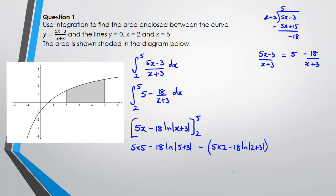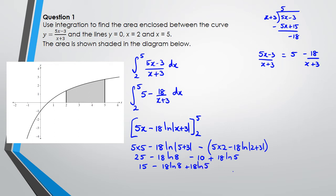You can put this in the calculator and get the answer 6.54. Working it out manually: 5 times 5 is 25, so 25 minus 18 ln 8, then negative 10, and the two negatives multiply to give positive 18 ln 5. This becomes 15 minus 18 ln 8 plus 18 ln 5, which simplifies with negative 18 as a common factor giving 15 minus 18 times (ln 8 minus ln 5). Simplifying, you get a final answer of 6.54.